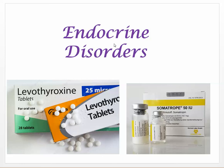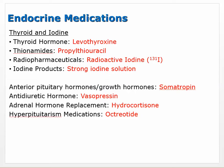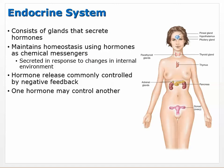This is chapter 40 of ATI endocrine disorders. We have about eight drugs to go through, and we're going to review as we go through some of the diseases that we're trying to treat.